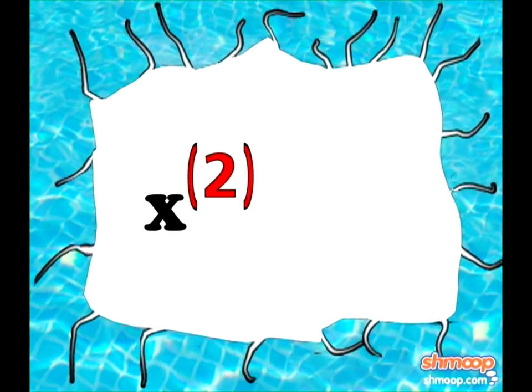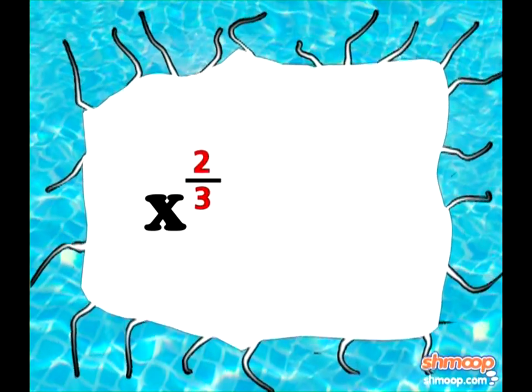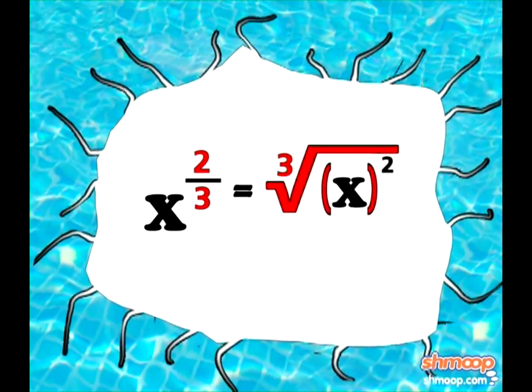which means our x is squared. Therefore, x to the power of 2 thirds is still a root. It's the cubed root of x squared.